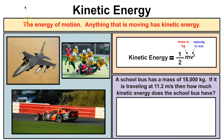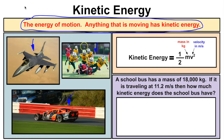Kinetic energy is the energy of motion — anything that is moving has kinetic energy. An F-16 jet, a race car, youth football players, and the football itself all have kinetic energy because they are in motion. To find the kinetic energy of a moving object, we use the formula: KE = ½mv², where mass is in kilograms and velocity is in meters per second.